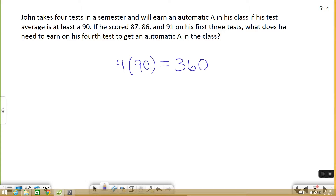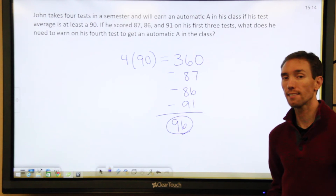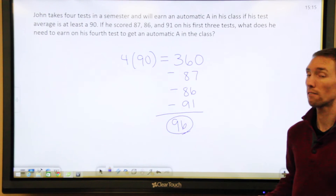360 is the total we need. If we subtract off the three tests we already have — 87, 86, and 91 — you subtract these off and you're left with 96. That means John has to get at least a 96 on his fourth test to get an average of 90 across the four.